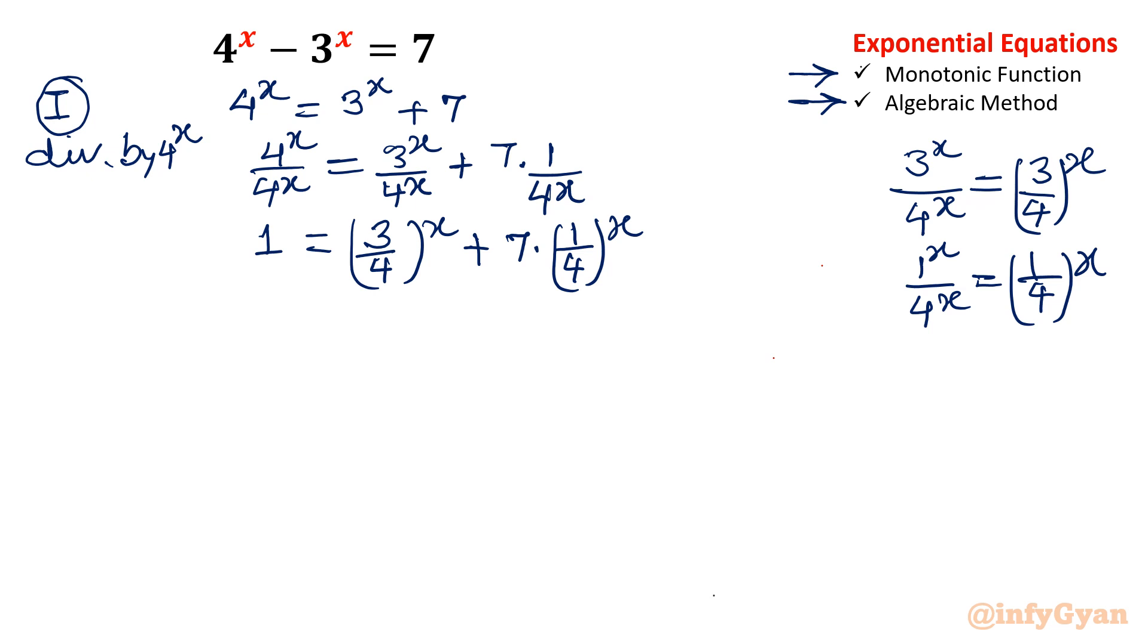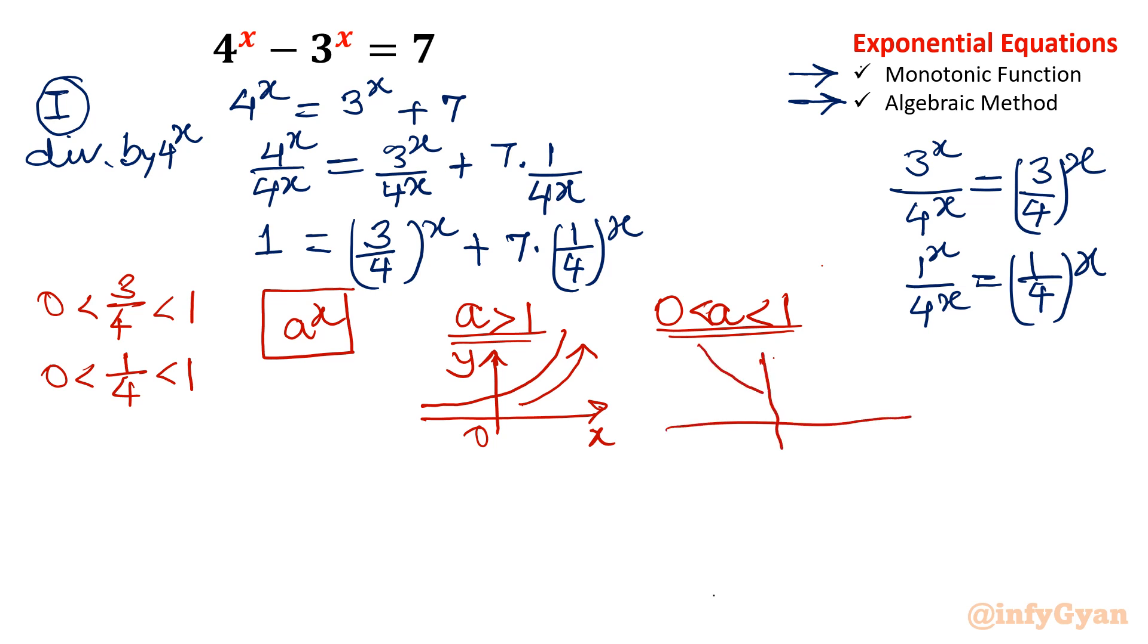Now see the observation from this equation. We will conclude that 3 over 4, it is lying in between 0 and 1. 1 over 4, it is also lying in between 0 and 1. Now let's talk about the graph of exponential function. I am considering the graph of a raise to the power x. If a is greater than 1, then your graph is monotonic increasing. Similarly if your a lies between 0 and 1, then your graph would be monotonic decreasing.